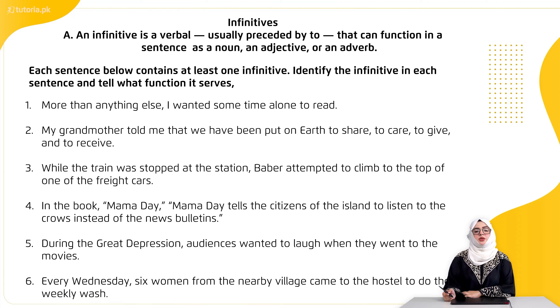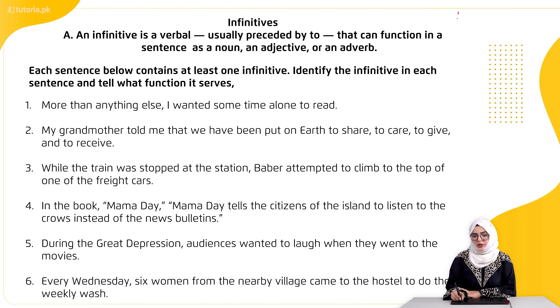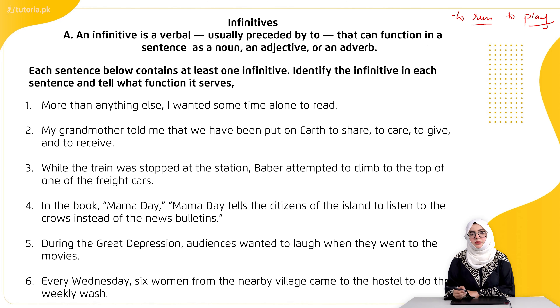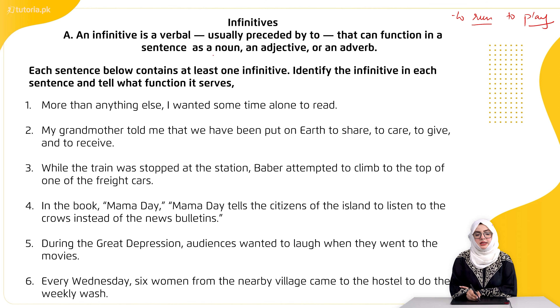Let's start discussing questions related to the grammar portion. Our first grammatical topic is infinitives. Infinitives hote hain 'to' plus base form of verbs — for example, 'to run,' 'to play.' 'Play' and 'run' are the base forms of the verb. An infinitive is a verb form usually preceded by 'to' that can function in a sentence as a noun, adjective, or adverb.